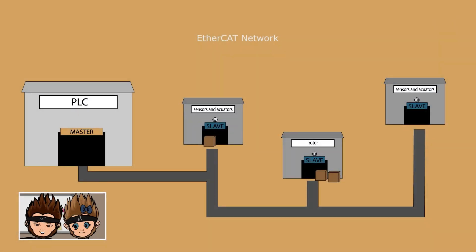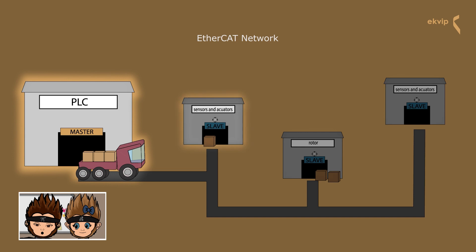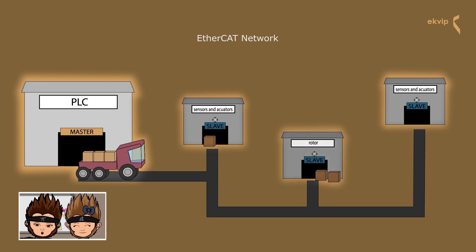Now we will show you how a cycle in the EtherCAT network looks like. We have our big warehouse here — it's our PLC with an integrated EtherCAT master stack. The big warehouse has a truck which brings packages to some little warehouses. The truck is the EtherCAT telegram with output data for the slaves. The slaves have a certain number of bytes for input and output data. The output data is for example for the actuators and the input data comes for example from the sensors.